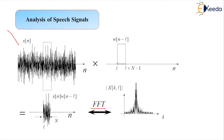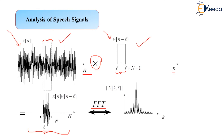This is the speech signal denoted by x(n). If we focus on a local portion using a window denoted by w(n minus L), having a certain span, where n is the discrete time parameter, then the product of the two — the original signal and the windowed signal — gives information that is stationary over that time localization. It is represented as x(n) times w(n minus L). When we perform this with Fast Fourier Transformation, the corresponding result can be plotted as the magnitude plot, mod of capital X(k, L). This gives us the spectral analysis for the speech signal.